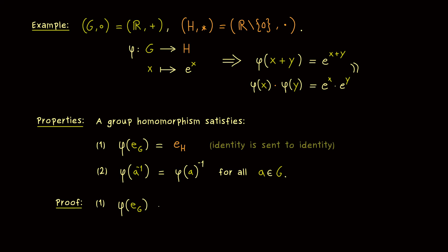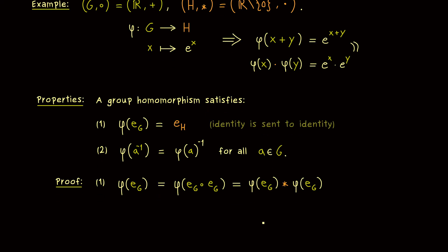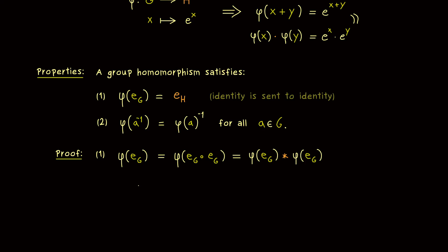So let's start with the first one by using the properties of the identity element. If we use e_G in the binary operation, we don't change anything. Therefore, instead of e_G, we can also write e_G with e_G. And then we can use the property of the group homomorphism. So now our calculation is in H, where the binary operation is denoted by a star. Here we could say: phi of e_G squared equals phi of e_G. And it turns out that such a property already defines the identity element in a group. This is not hard to see, because we can write e_H as an element times its inverse.